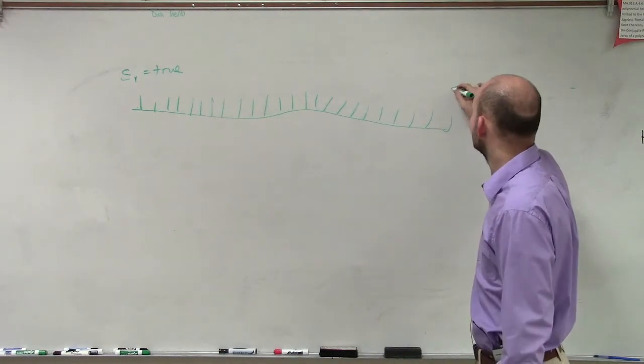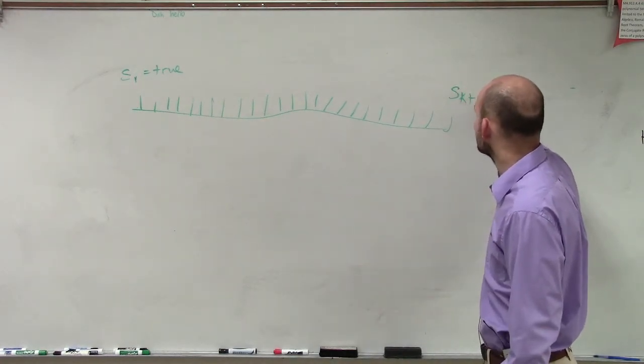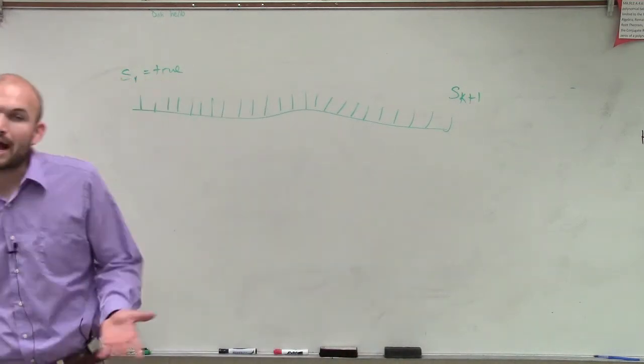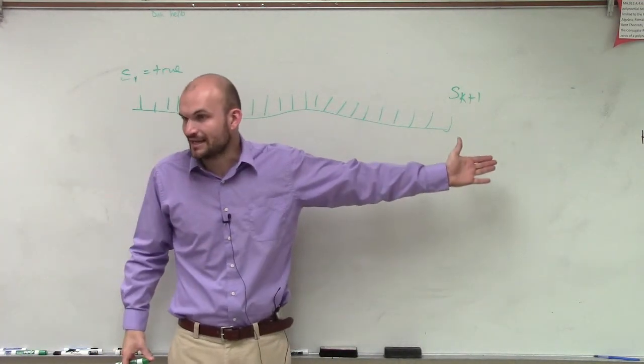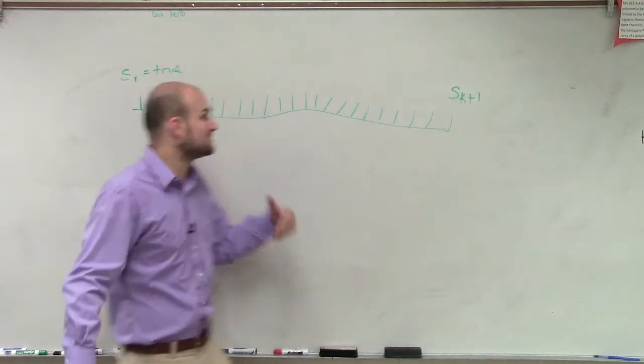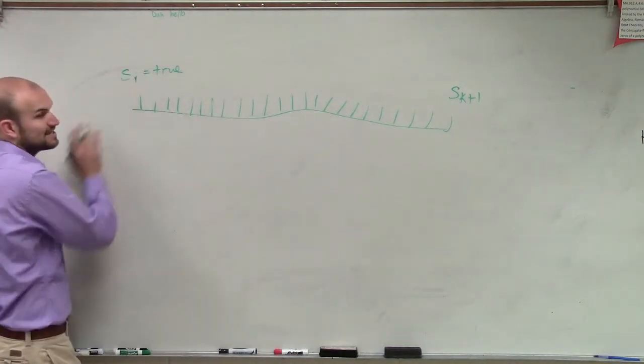So what we're going to want to prove is that we can get to the point of s of k plus one. But how are we going to get to our ending value of s of k plus one? To do that, the way that we're going to prove is first we're going to prove that s of one is true.